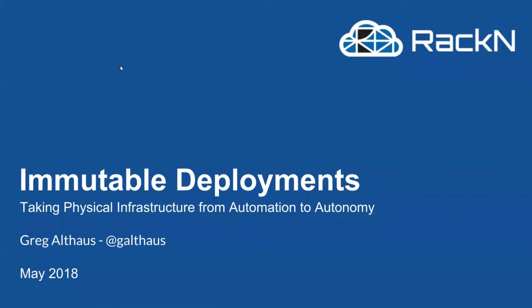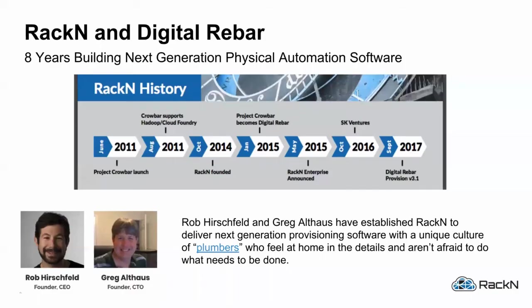The immutable part is that in our walkthrough tutorial we'll be using an image-based deploy system that you could use to capture a system and redeploy. Rackin is a company with an open source project called Digital Rebar. We've been working on physical server automation for over eight years, starting at Dell writing the Crowbar project. We're now on version 3, called Digital Rebar Provision, version 3.8.2.